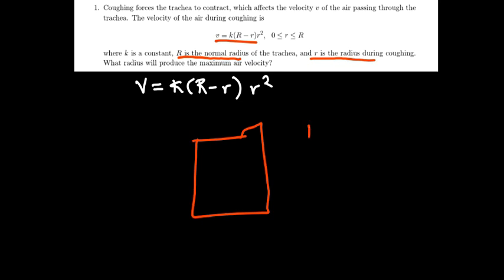So we write our equation: v equals k times (R minus r) times r squared. I want you to understand that the capital letter R stands for the normal radius, and the small r is the radius that is produced during the coughing, during the contraction. So after it contracts, it gets longer and smaller. The radius becomes smaller.